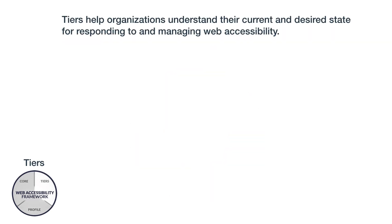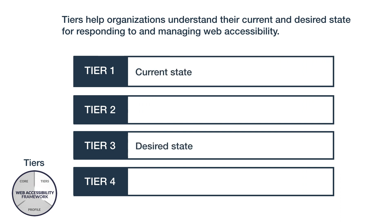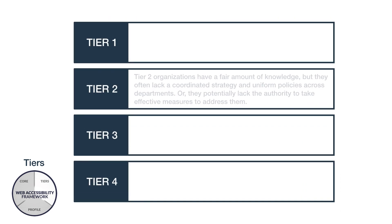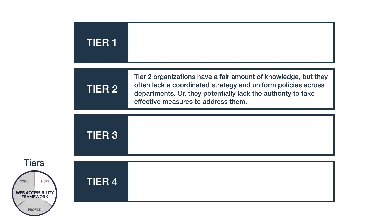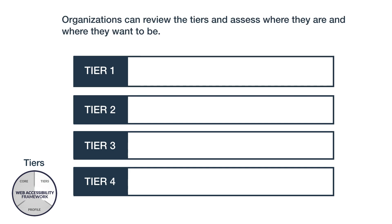Tiers help organizations understand their current and desired state for responding to and managing web accessibility. There are four tiers. As an example, the second tier is risk-informed. Tier 2 organizations have a fair amount of knowledge, but they often lack a coordinated strategy and uniform policies across departments, or they potentially lack the authority to take effective measures to address them. Organizations can review the tiers and assess where they are and where they want to be.